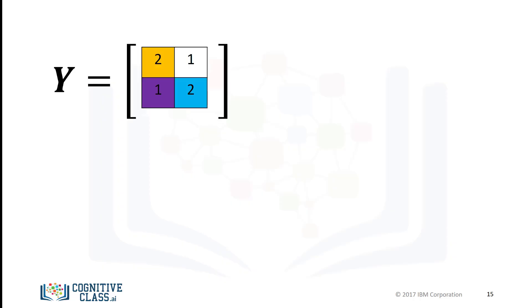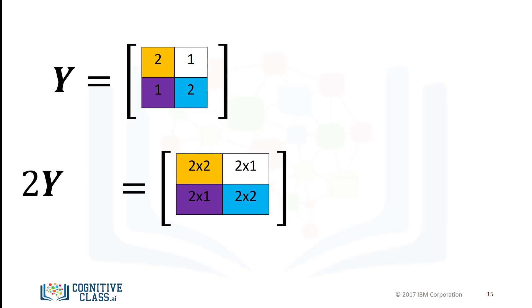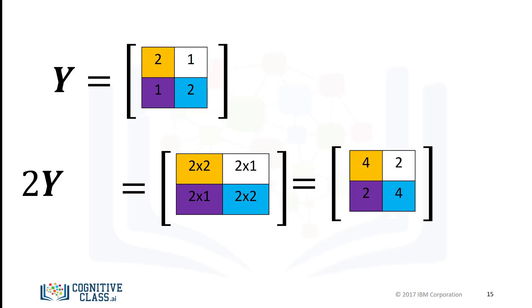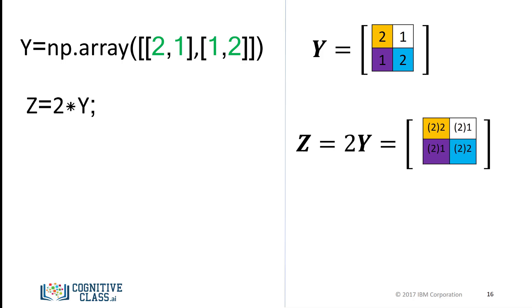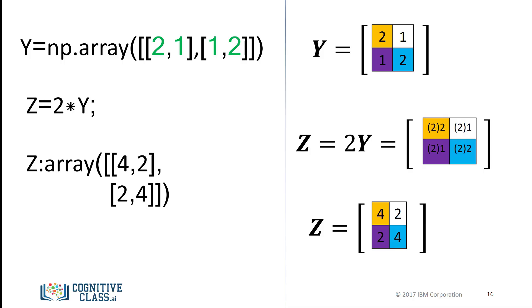Multiplying a NumPy array by a scalar is identical to multiplying a matrix by a scalar. Consider the matrix Y. If we multiply the matrix by the scalar 2, we simply multiply every element in the matrix by 2. The result is a new matrix of the same size where each element is multiplied by 2. We first define the array Y, then multiply the array by a scalar and assign it to the variable Z. The result is a new array where each element is multiplied by 2.